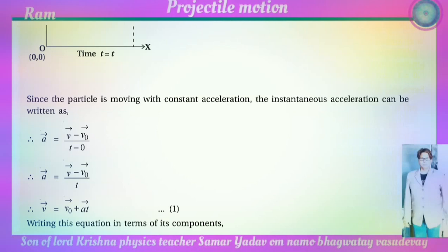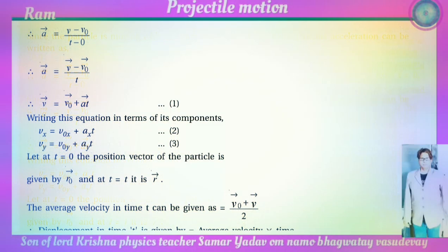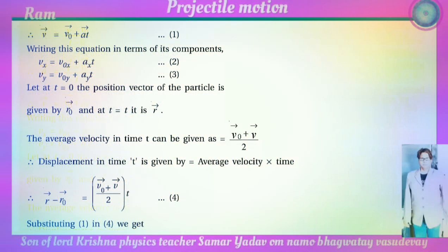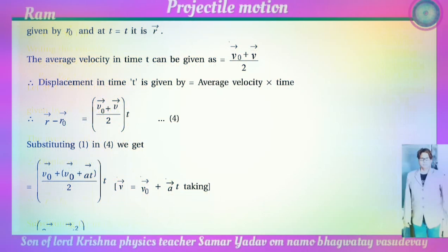Therefore v equals v-zero plus a t. Writing in terms of components: v_x equals v-zero-x plus a_x t, and v_y equals v-zero-y plus a_y t. At t equals zero the position vector is r-zero, and at time t it is r. The average velocity over time t is (v-zero plus v) divided by 2. The displacement is r minus r-zero equals (v-zero plus v) divided by 2 times t.